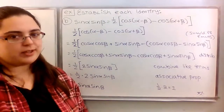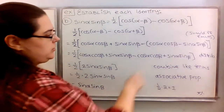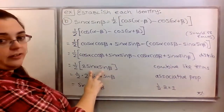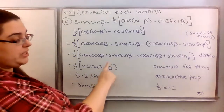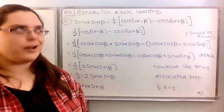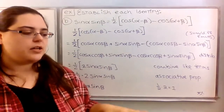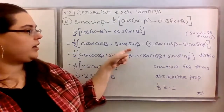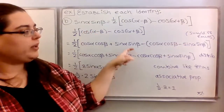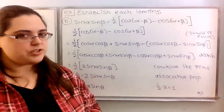One common mistake on a problem like this is forgetting the parentheses when distributing the negative sign. If we forgot those parentheses, we would have had a minus sign in front of the sine α sine β term. So when we got to that step, instead of having two sine α sine β, we would have had zero — because they would have canceled. If you get zero when you needed sine α sine β, that's a signal you made a mistake. Use things like that to help you recognize when something went wrong.